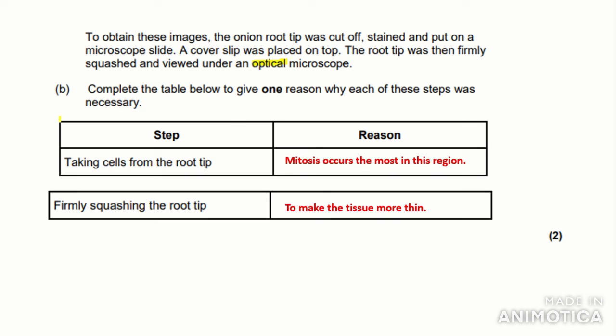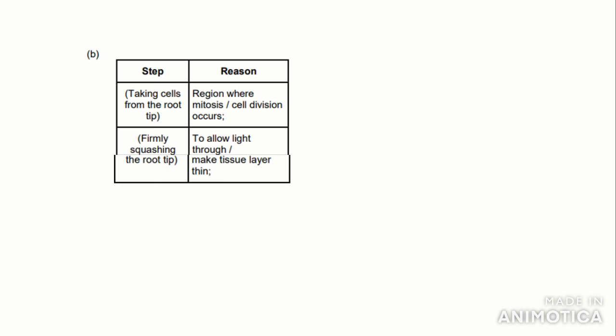Look at the mark scheme. So the first point here: region where mitosis or cell division occurs. And the next one: to allow light through or to make tissue layer thin. I think that is it for all I want to say, and please comment below if you have any questions and I'll see you in the next video.